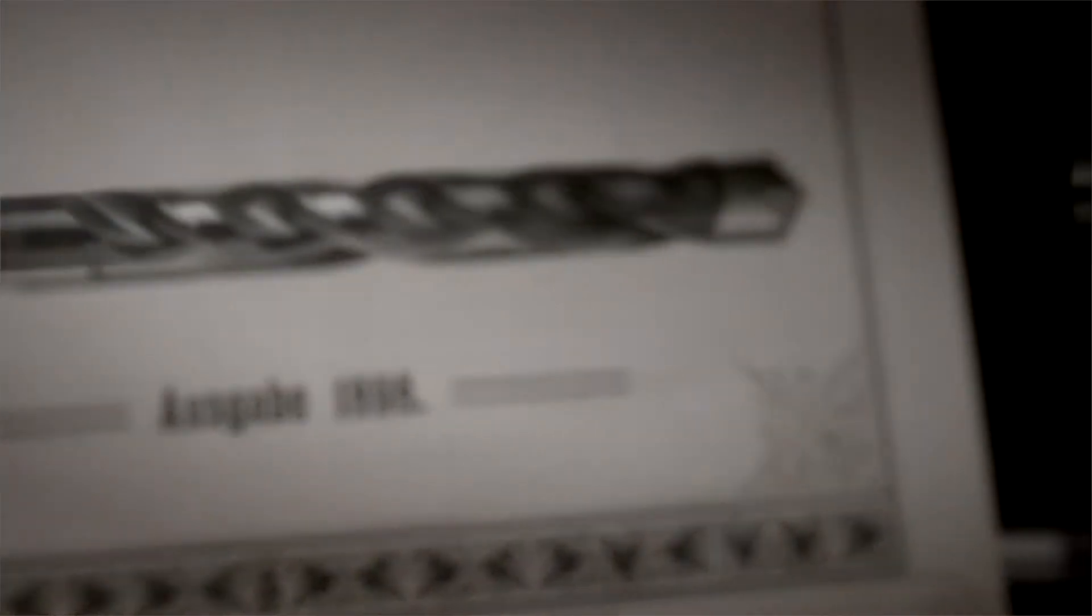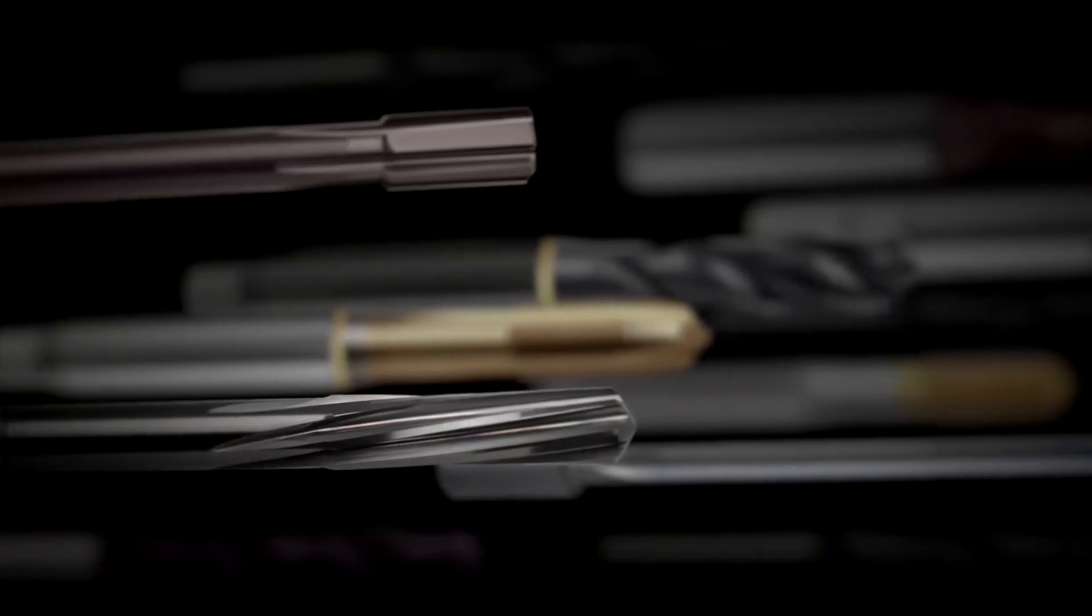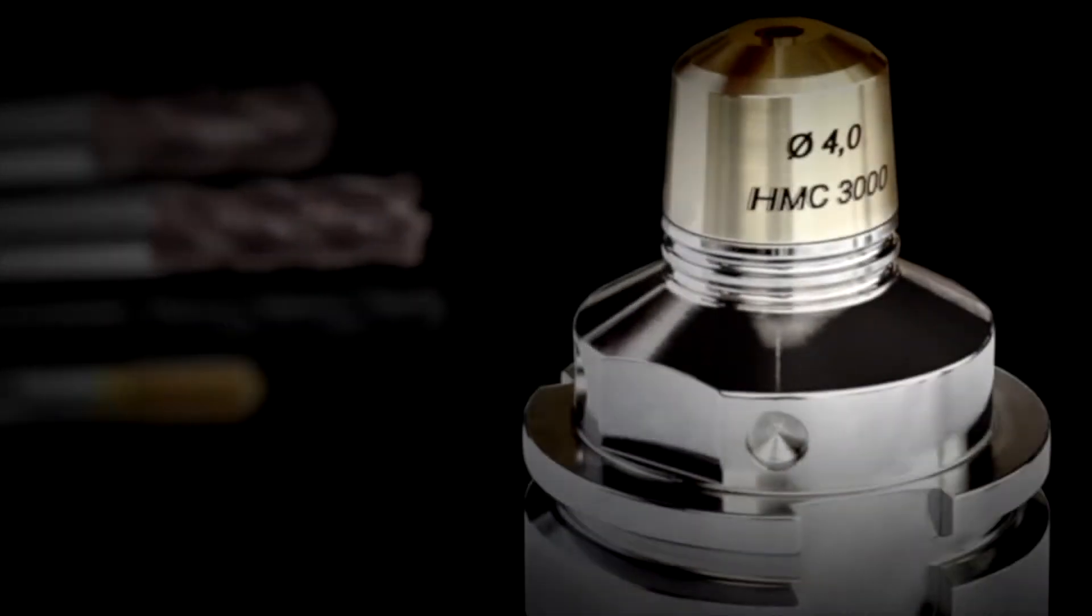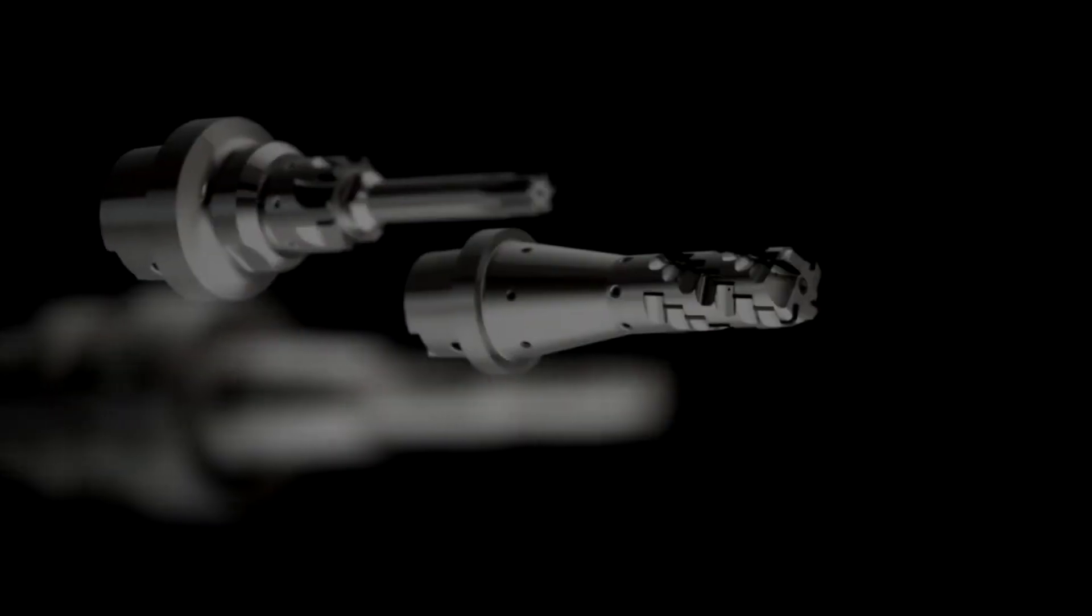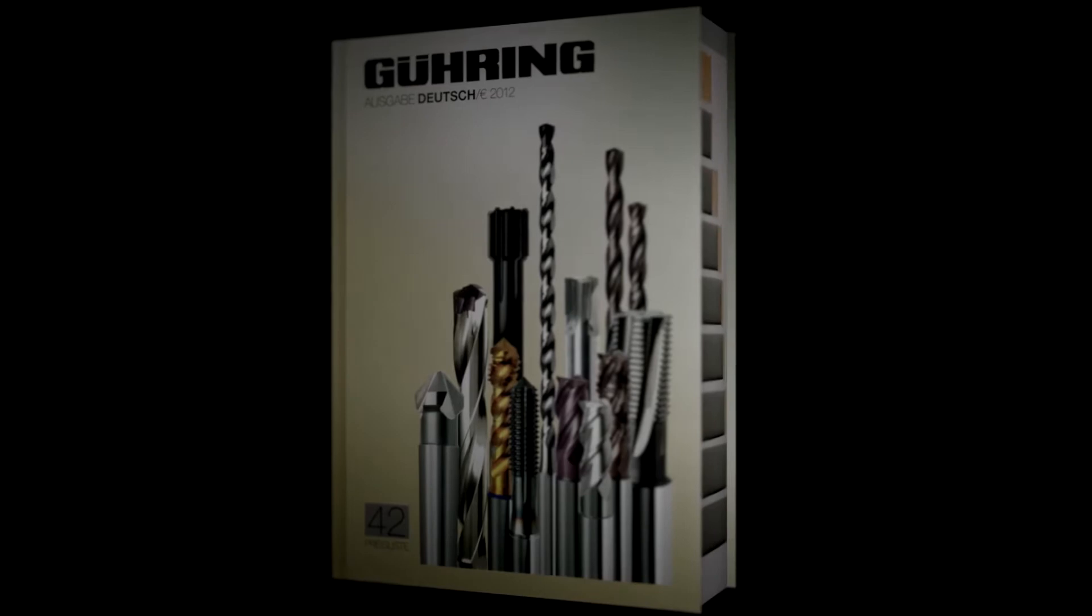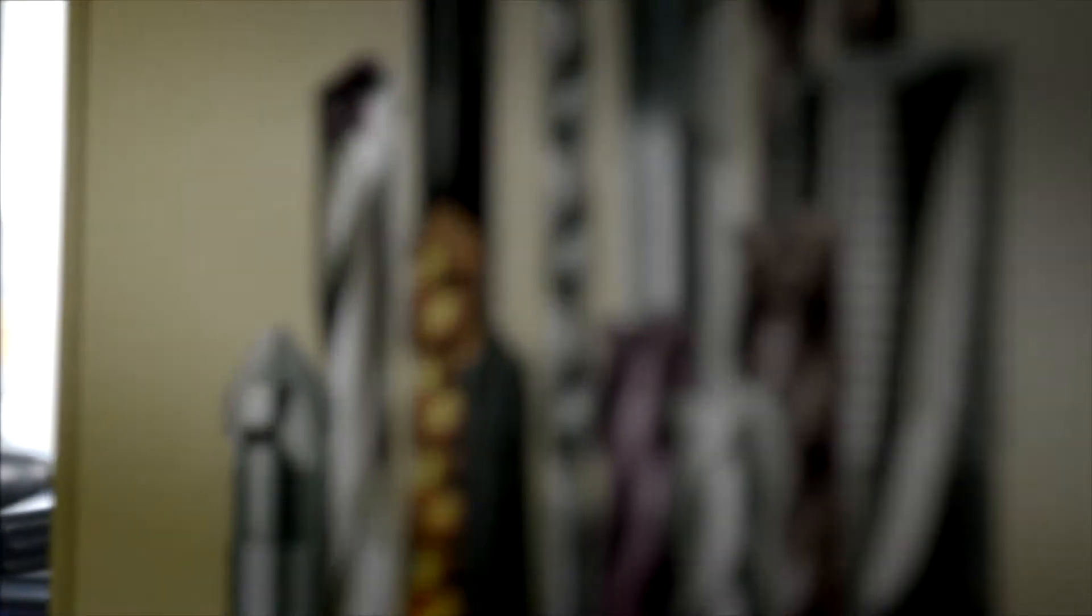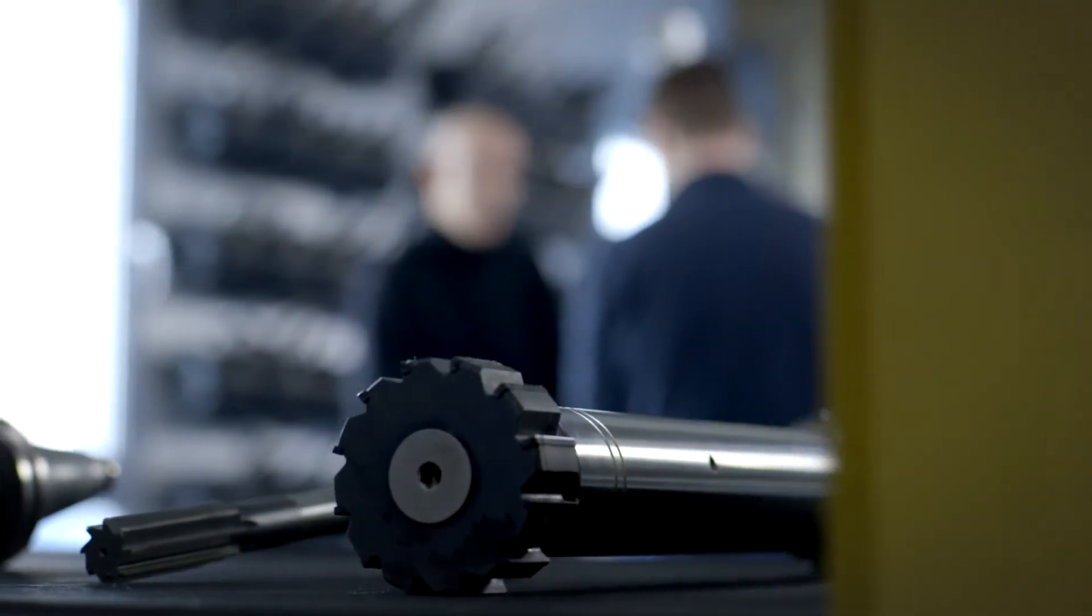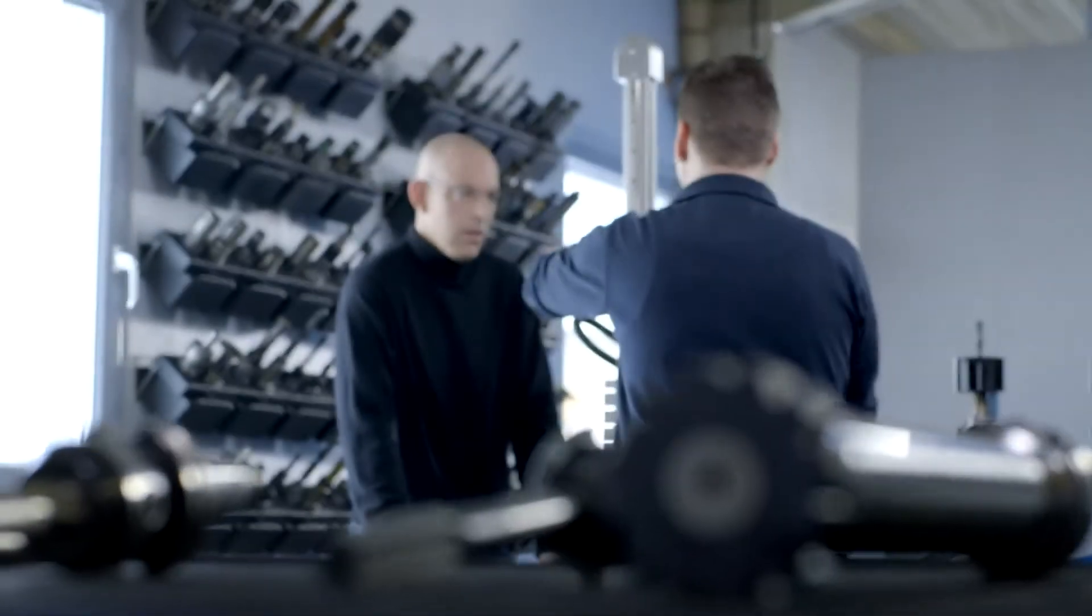Throughout the years, we have expanded our product range into reaming and thread cutting tools, as well as gun drills and milling tools. Tool holders and high-performance PCD tools exemplify excellence in machining. With over 1,800 types and approximately 45,000 sizes, Göring offers the most extensive standard product range in the market.